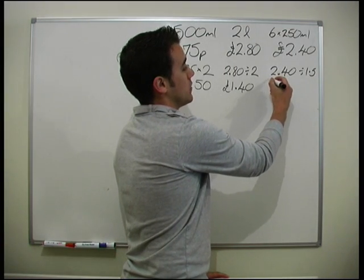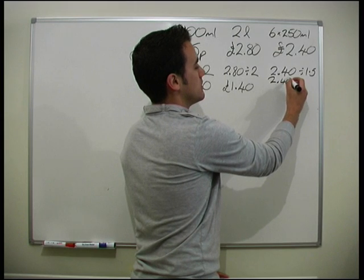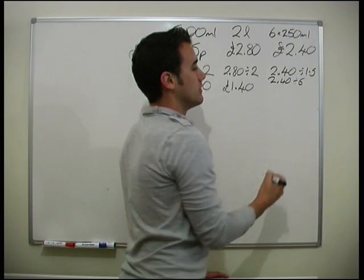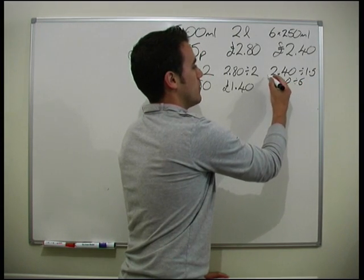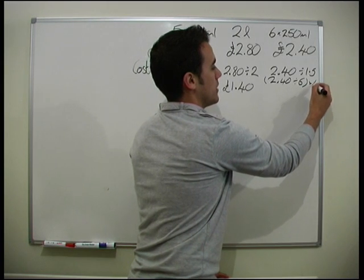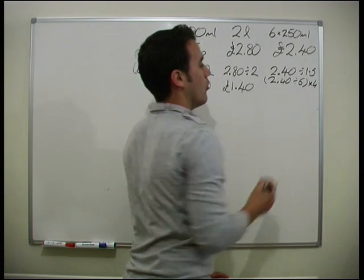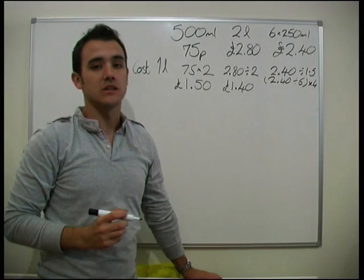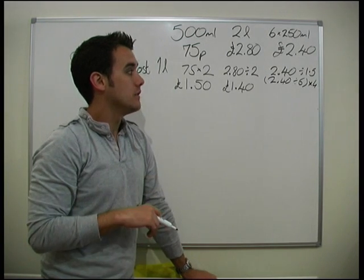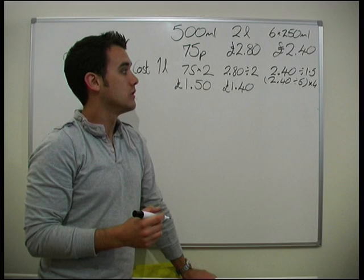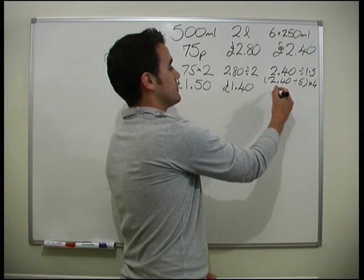So let's do that because that sounds a lot easier. So £2.40 divided by 6 and then we want the answer to that times by 4. So £2.40 divided by 6 is 40p, and then times by 4 is going to give us £1.60.